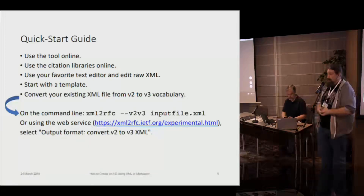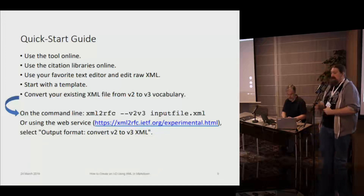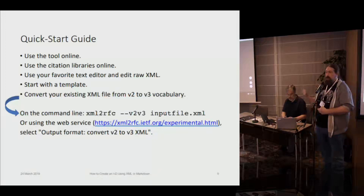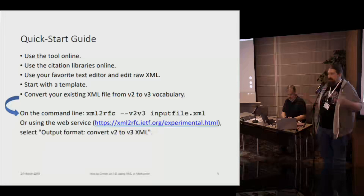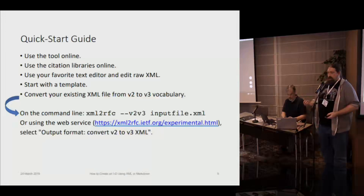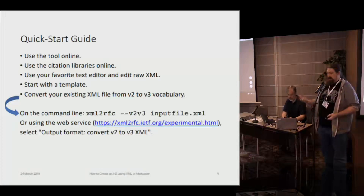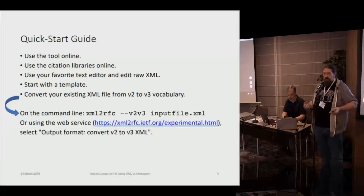You can use your favorite tool to do the editing and use the XML to RFC in order to generate those outputs you can submit to the data tracker. The citation libraries are basically all the references you would normally put in an RFC for your other documents — it's a nice collection and an easy way to use those. There's the command line to generate a V3 from an existing V2, or you can use the web service, which will give you the source XML you can use with your editor of choice.